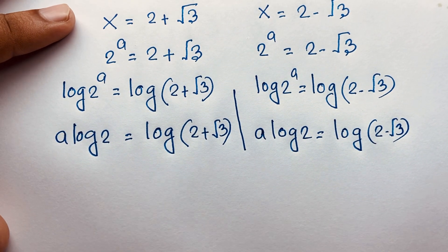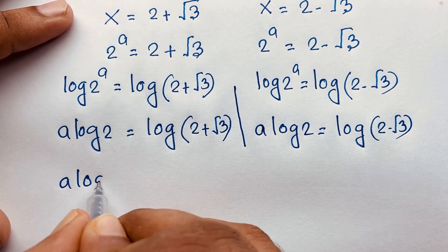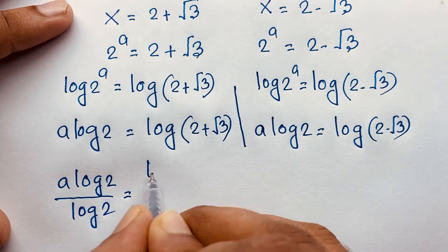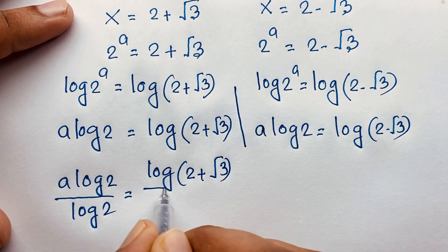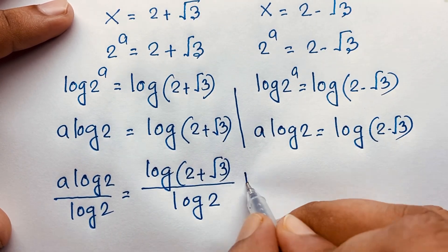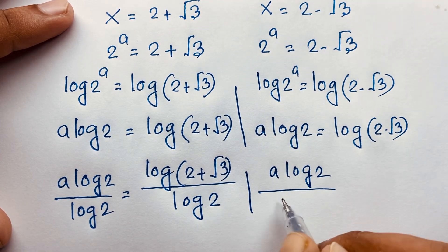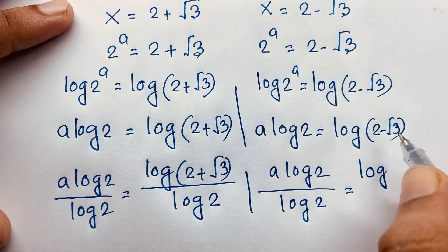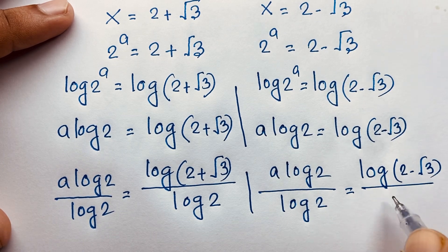I divide both sides by log 2. So a times log 2 over log 2 equals log(2 plus square root 3) over log 2. Similarly, a times log 2 divided by log 2 equals log(2 minus square root 3) over log 2.